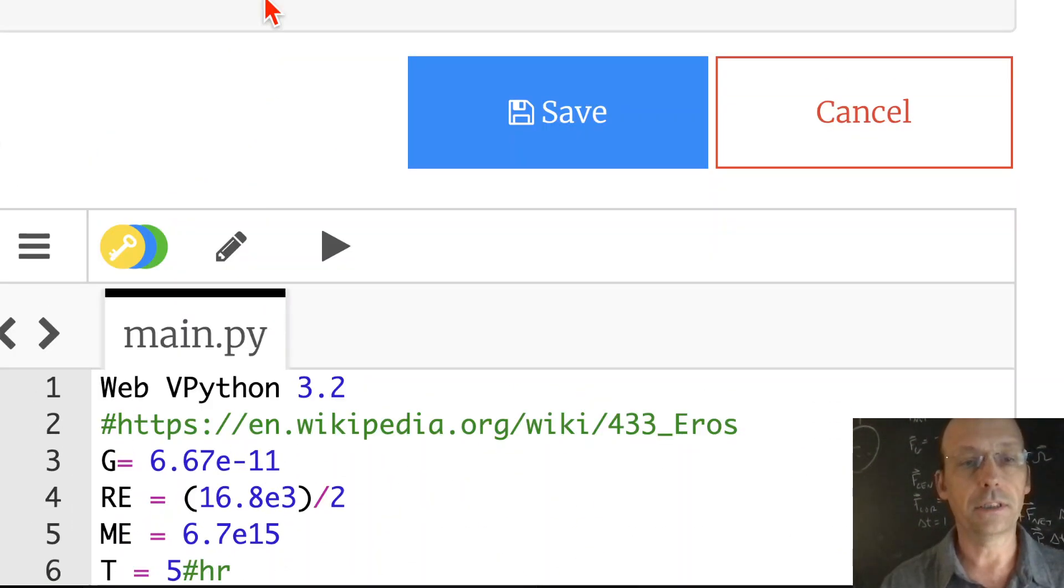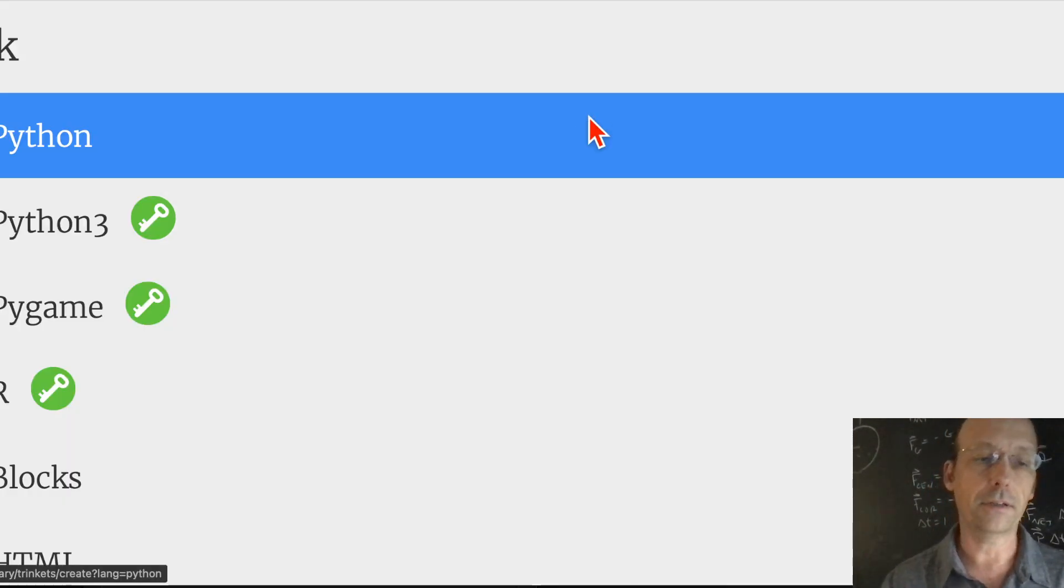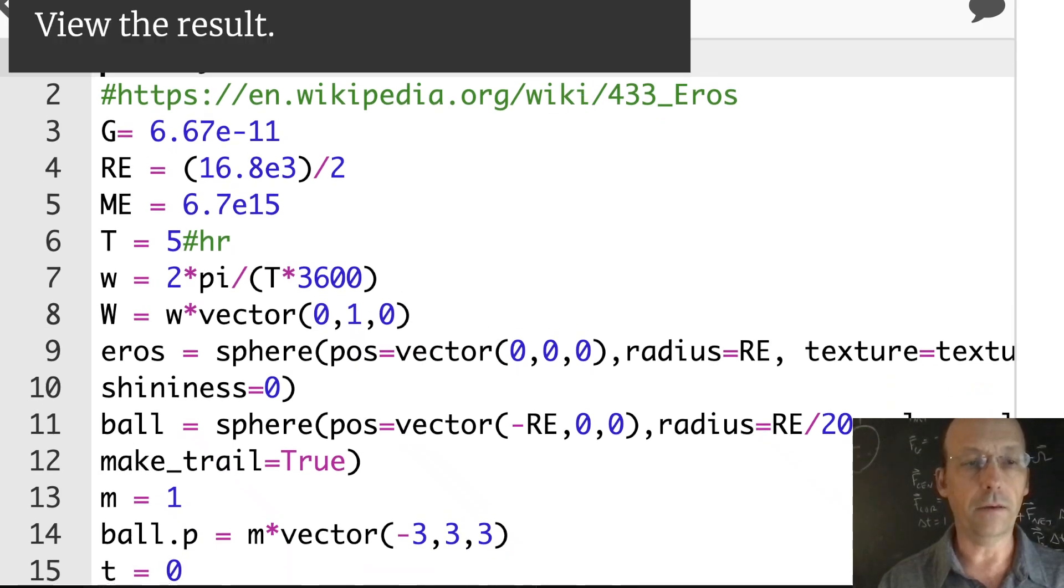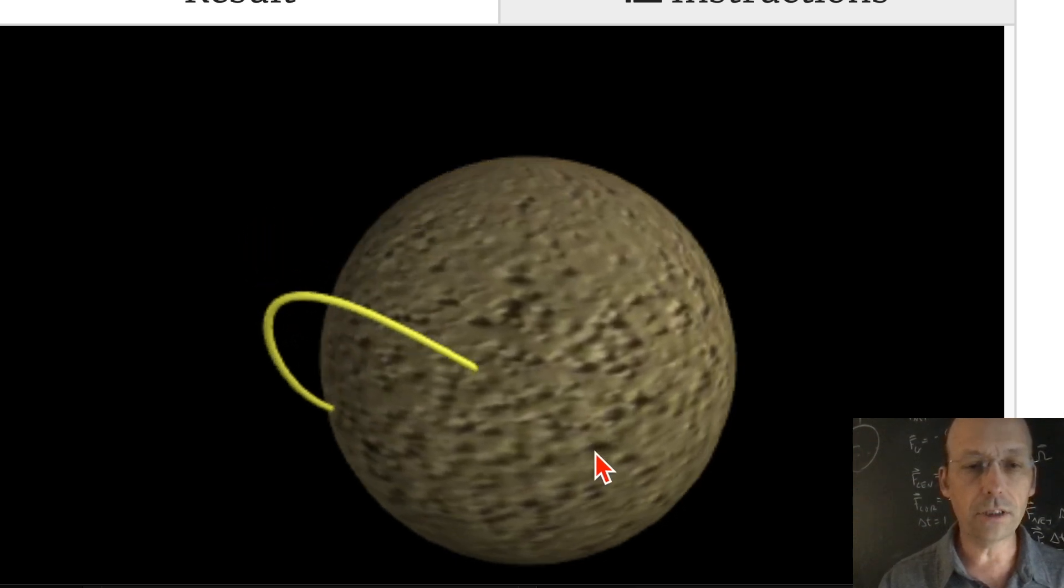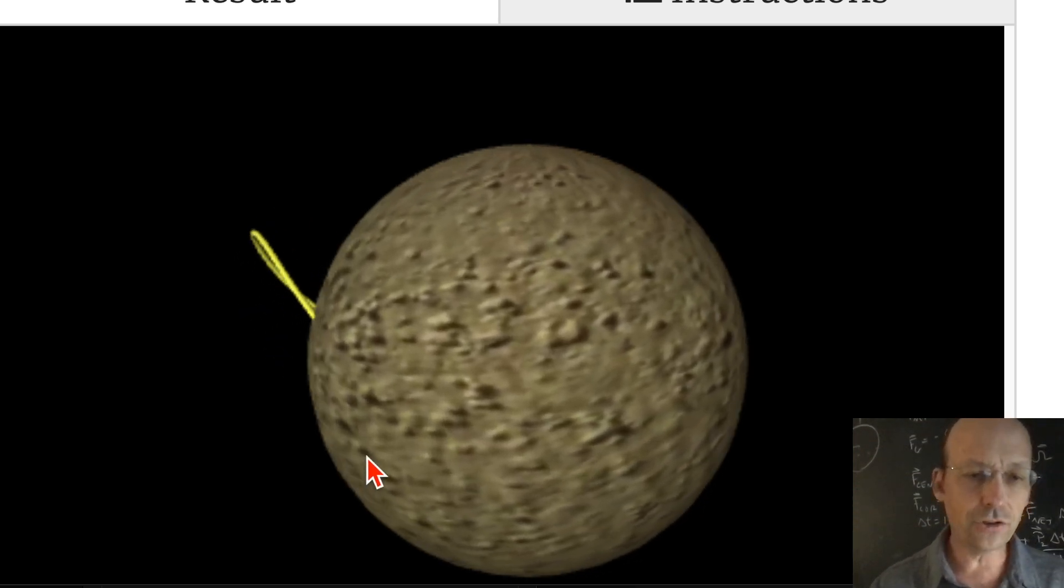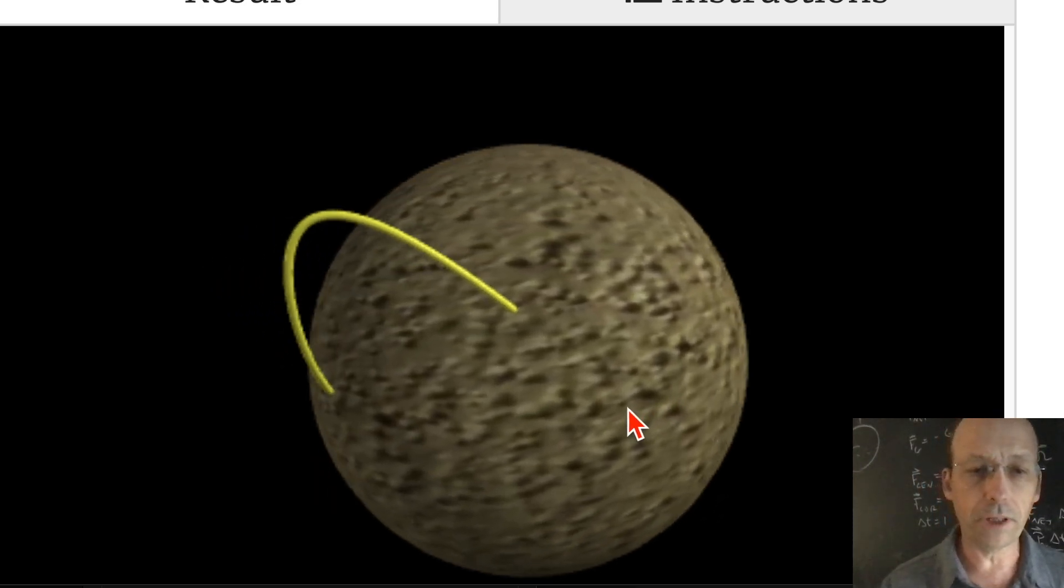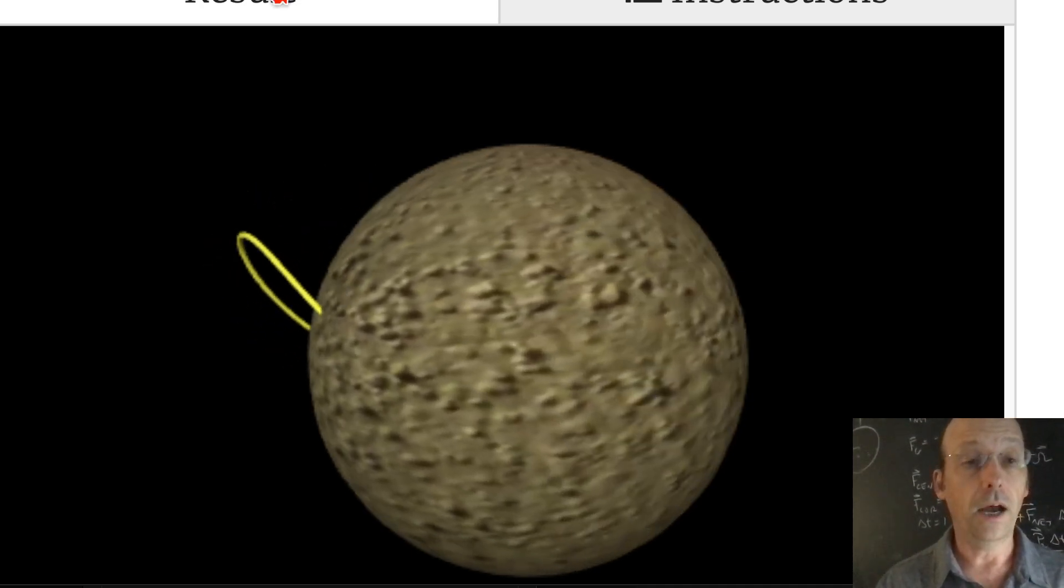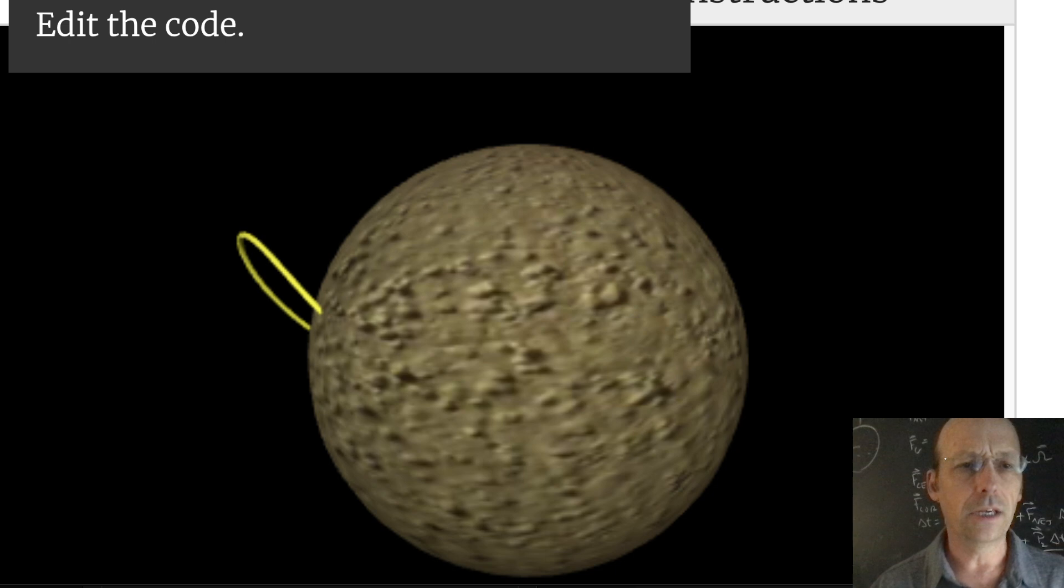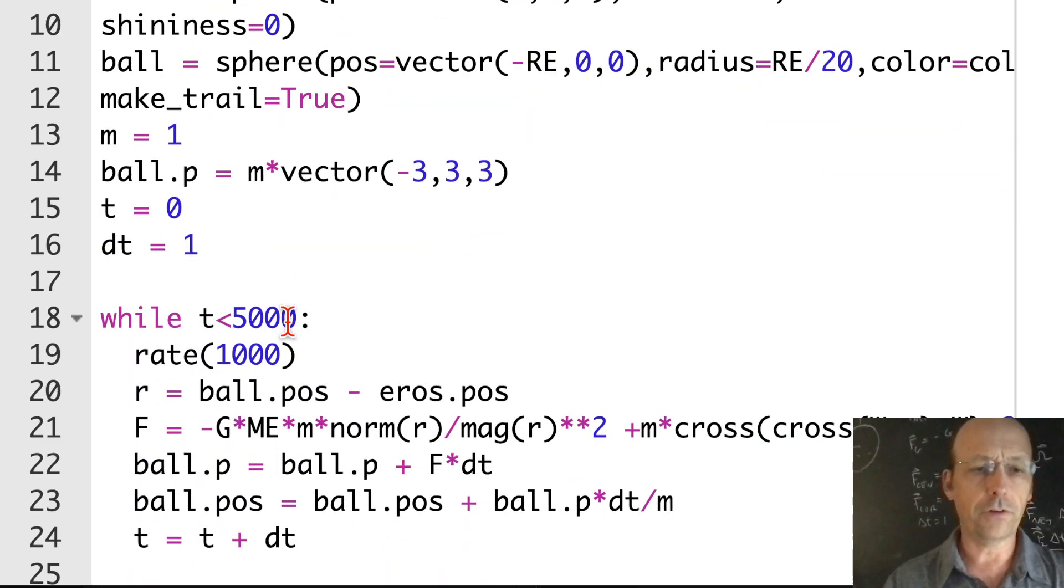Eros Coriolis. Ready for the run. It's doing something. You'll notice it's curving, right? It's not just a straight plain line. It's not just a parabolic thing. There are some other forces at play here. I think the thing is working. And it went inside the planet because it didn't know any better. So we can fix that.